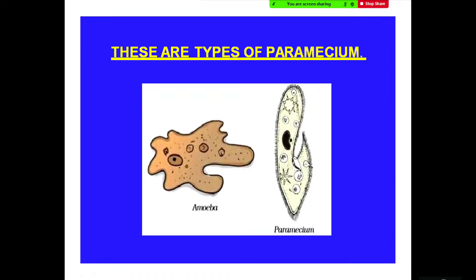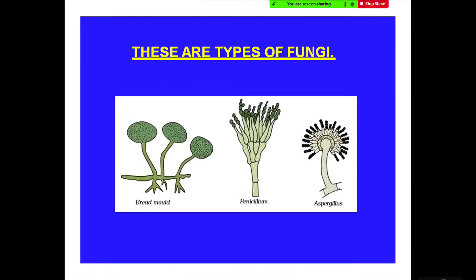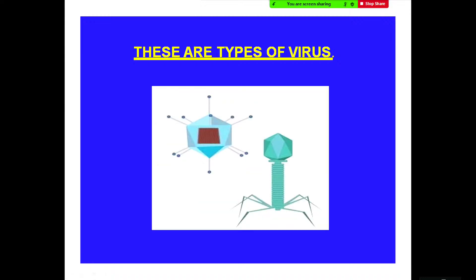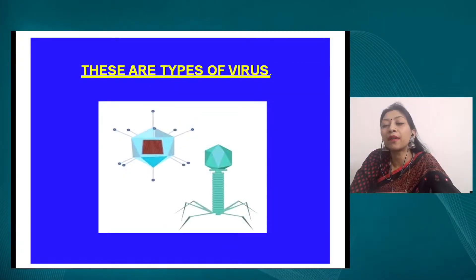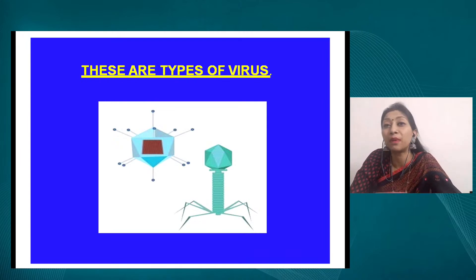These are some types of protozoa: paramecium and amoeba. Paramecium looks like a slipper and amoeba doesn't have any fixed shape. These are some types of fungi. And these are viruses — we have all been battling coronavirus for two years. Coronavirus is one of those categories of virus, one of the microorganisms, and that is why we were unable to detect its presence in our body or our family members.